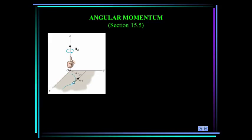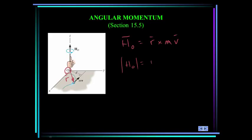First some definitions. I'm going to define angular momentum for you. We represent it by H, and the angular momentum about a fixed point O — it's very important, this point is fixed, it's not moving — is equal to R cross MV. R is the position vector to the particle, and V is its velocity. The magnitude of this vector is equal to the mass times its velocity times D, where D is the perpendicular distance to the MV vector from the point O.